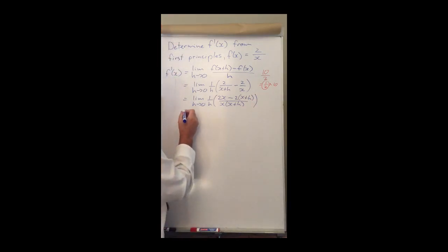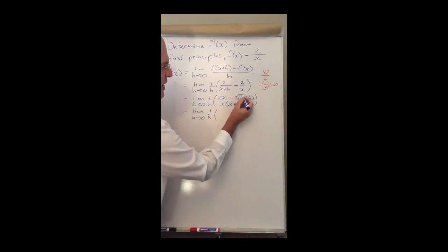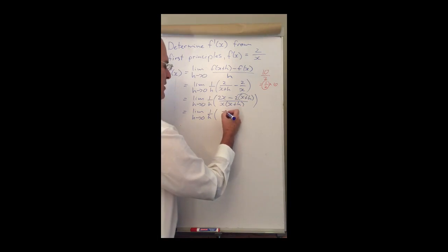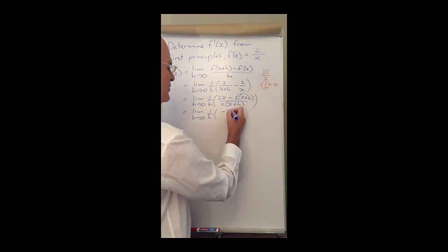So there we go, let's continue. We have the limit where h approaches 0, 1 over h. What do we have here? We have 2x minus, and if we should multiply out the 2 into the bracket, we're going to end up with 2 minus 2x. So 2x minus 2x will cancel out, so I'm going to be left over with minus 2 times h, so it will be -2h.